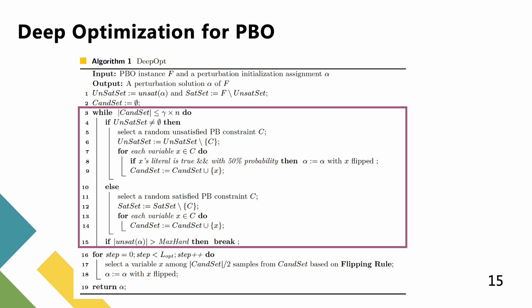In the first phase, we flip several variables to achieve the purpose of early preparation. There are two exit conditions in this phase. The first one is that the size of the candidate set is larger than γ times n, where n is the number of variables. Whereas, the second one is that the number of unsatisfied constraints under the current assignment is larger than max-hard.